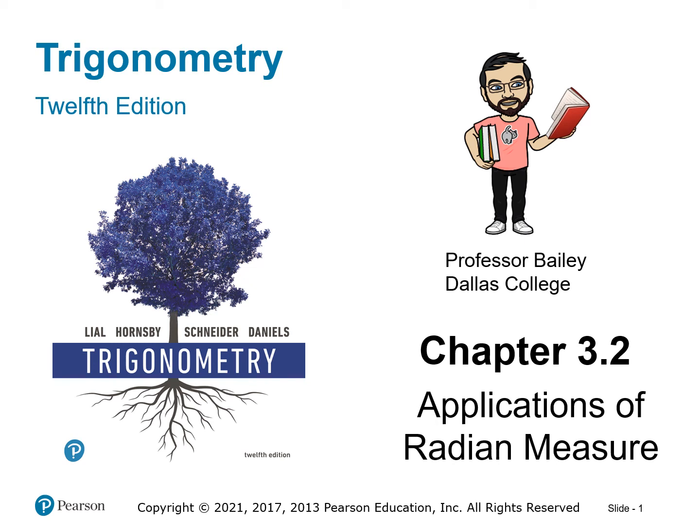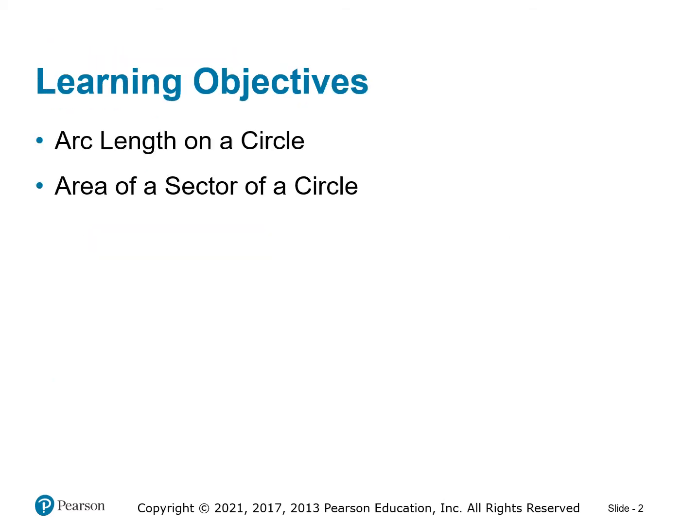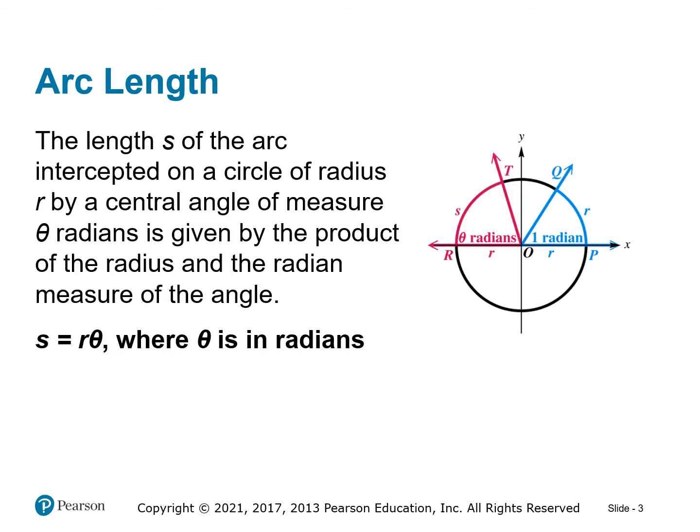Welcome back to Trigonometry at Dallas College. This is Professor Bailey and today we're looking at chapter 3.2, Applications of Radian Measure. We're going to figure out how to calculate the arc length on a circle and also the area of a sector of a circle — a couple new formulas and great applications from trigonometry.